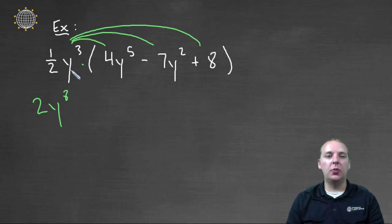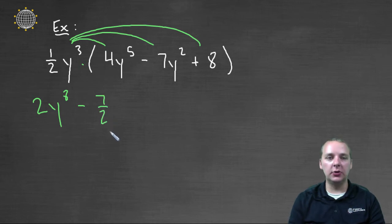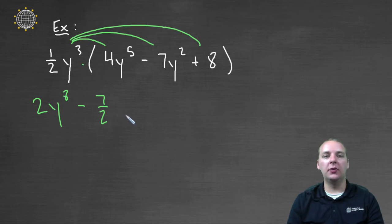And then we'll take one-half y³ times negative 7y². This would be a minus, one-half times 7 would be seven-halves, and that's okay, you can have fractions as your coefficients. You can actually have any real value for the coefficient. And y³ times y² would be y⁵.